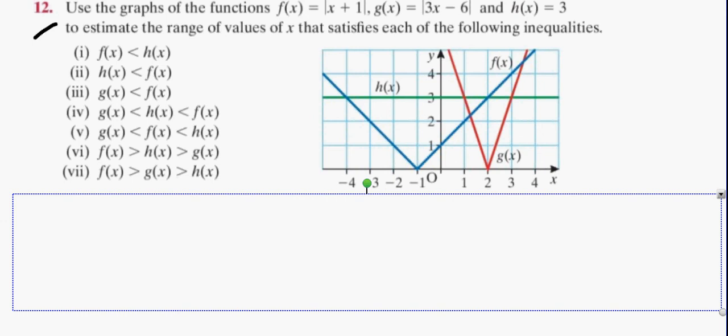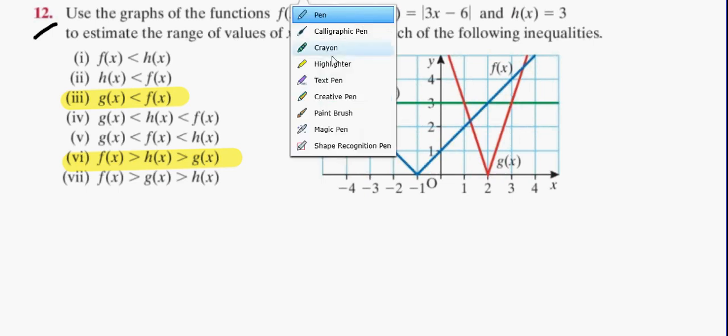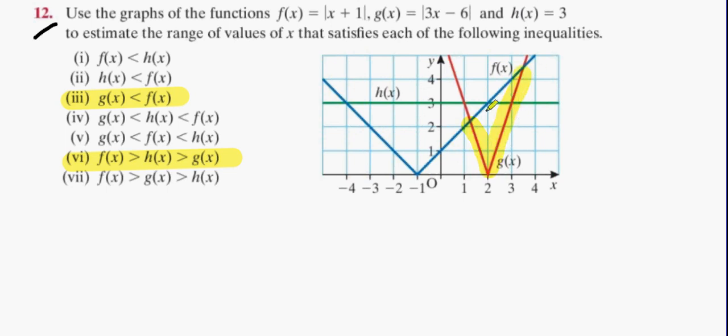Question 12. Use the graphs of the following functions. f of x is the modulus of x plus 1, g of x is the modulus of 3x minus 6, and h of x equals 3. Estimate the range of values of x that satisfies each of the following inequalities. I'll do this one and this one. Now, where is g of x smaller than f of x? Where is the red one smaller than the blue one? That region there. And where does it start and end? Call it 1.2 less than x less than 3.6 ish. That was pretty easy, that one.